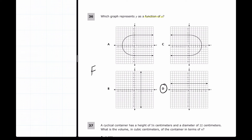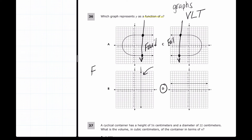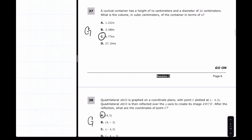For question 36, we want to know which graph represents a function. We use the vertical line test: draw a line straight down and it must hit only one time. Answer A fails — the line hits twice. Answer C also fails — you can find a place where it hits twice. Answer B fails completely — every point is hit. Answer D is the only one where no matter where you draw the line, it only touches once.